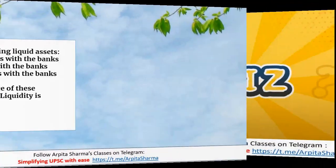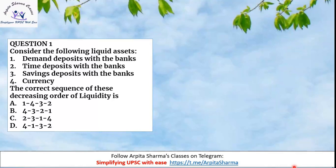Question 1: Consider the following liquid assets — demand deposits with the banks, time deposits with the banks, saving deposits with the banks, and currency. What would be the correct sequence in decreasing order of liquidity? That is, what is the most liquid first, then the next liquid thing.